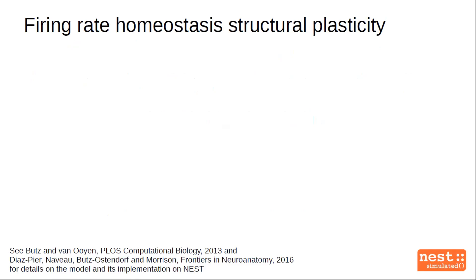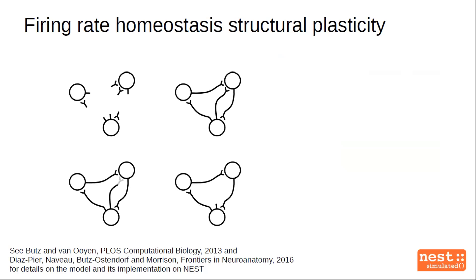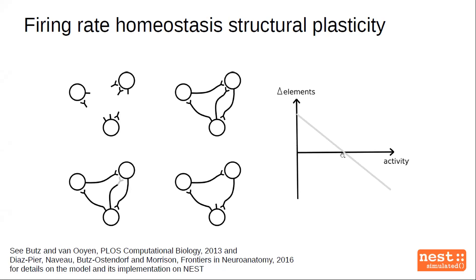For the structural plasticity model, we used the model proposed by Butz and van Ooyen, based on previous models by van Ooyen and also the compensating algorithm by Dammasch, recently implemented in NEST — the version I've used. In this model, neurons have a set of pre- and post-synaptic elements, which we can think of as spines and boutons. These elements are wired into pairs of one pre- and one post-synaptic element to form a synapse. Elements can be deleted, which deletes the synapse and leaves the corresponding element available to form a new one. The number of elements a neuron has is controlled by its own activity level, using a linear rule with a negative slope: neurons create new elements when firing below the target rate and delete elements when firing above it.